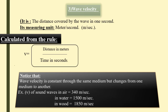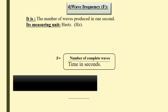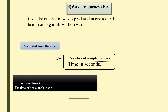For example, the speed of sound in air is 340 m/s, in water is 1,500 m/s, and in wood is 1,850 m/s. Number four: wave frequency — the number of waves produced in one second. The measuring unit is Hertz. Frequency = number of complete waves ÷ time. Frequency is the inverse of periodic time. Periodic time is the time of one complete wave, calculated as: T = 1/f, or T = time ÷ number of complete waves.